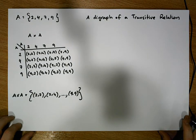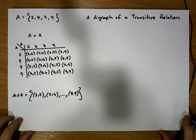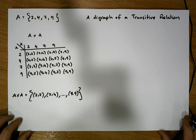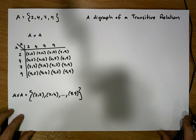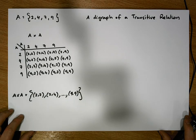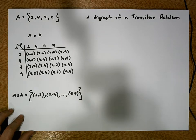Hi guys, this is Jonathan Lambert with the Mathematics Development and Support Service at the National College of Ireland. This short video is going to deal with digraphs, and in particular what a digraph of a transitive relation looks like.